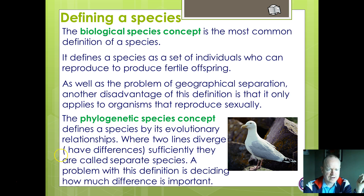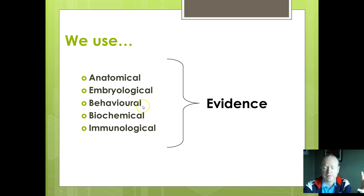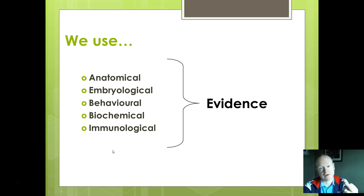Let's look at some evidence for phylogenetics. We've already talked about anatomical, embryological, and behavioural differences, which was the information available to people in the 16th, 17th, 18th, and 19th centuries. Now we're going to think about more complex evidence — like biochemical and immunological evidence — which is what we use to contribute to our understanding of genetics today.